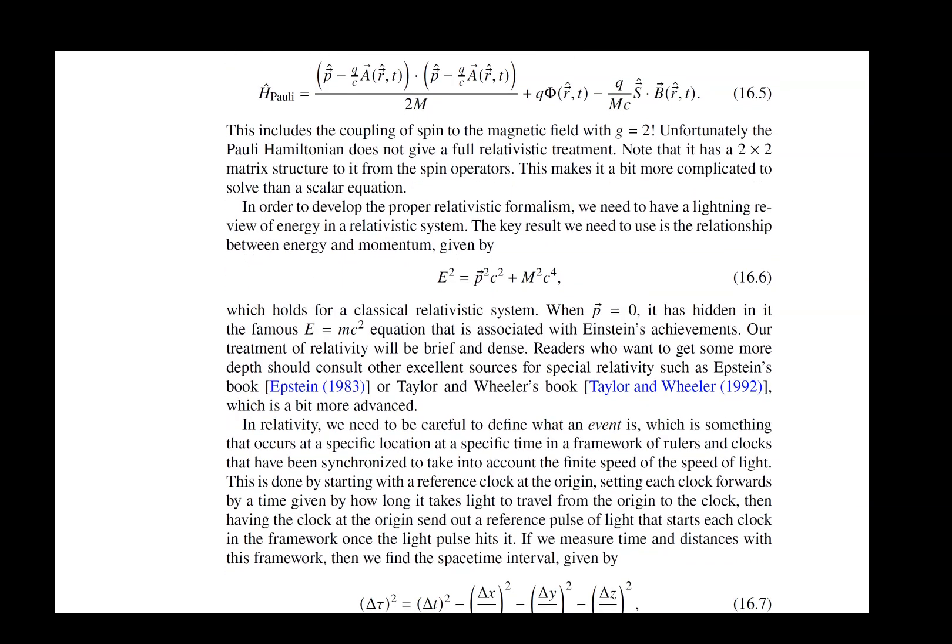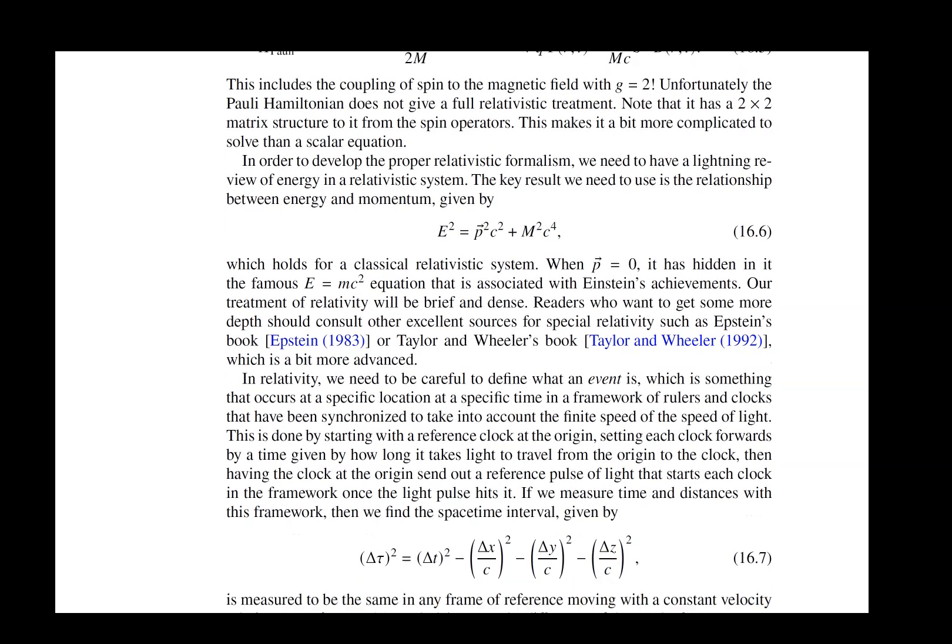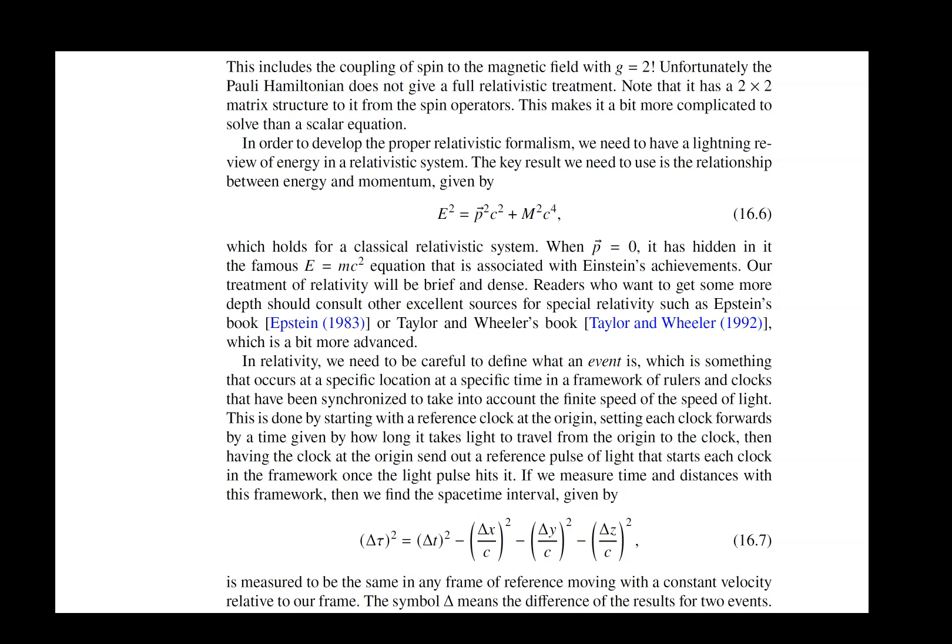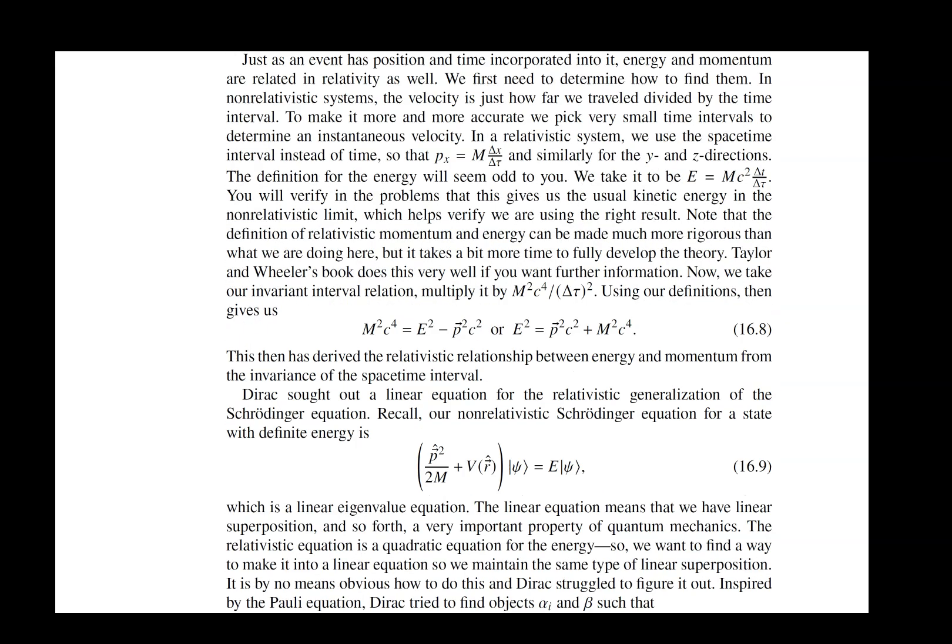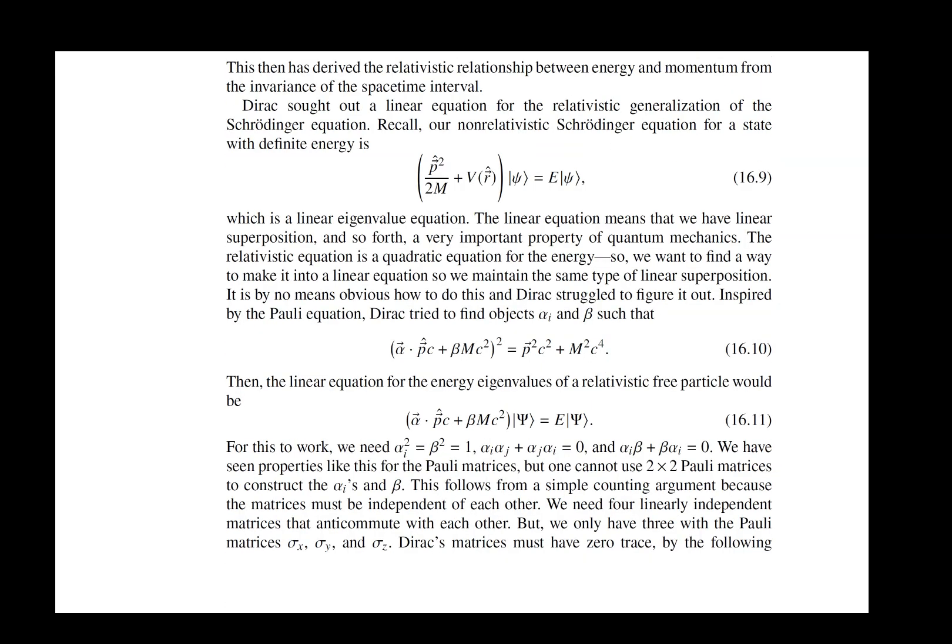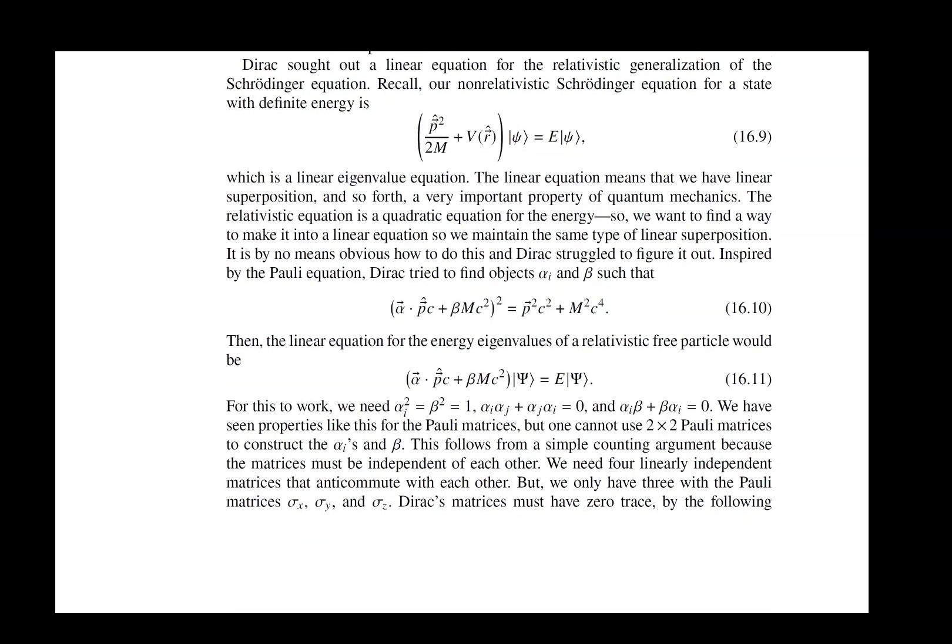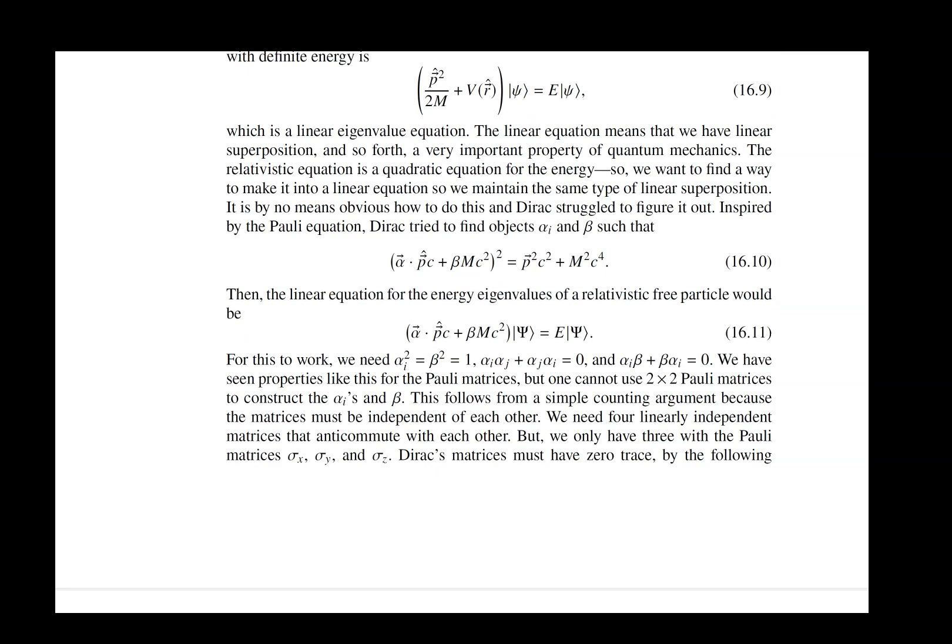That really has in it the key that guides how one constructs the Dirac equation. We have to start from the relationship between energy and momentum, that e squared equals p squared c squared plus m squared c to the fourth. I have a little discussion that motivates where that comes from. But we use that to help us figure out how do we derive this Dirac equation. The idea is we use something similar to what Pauli did, where he found sigma dot p squared was equal to p squared.